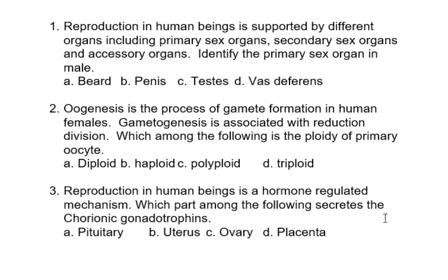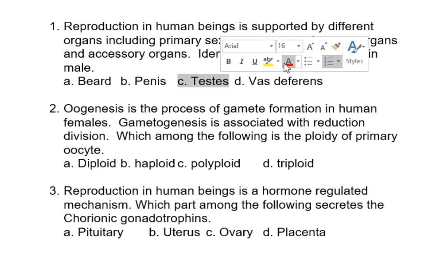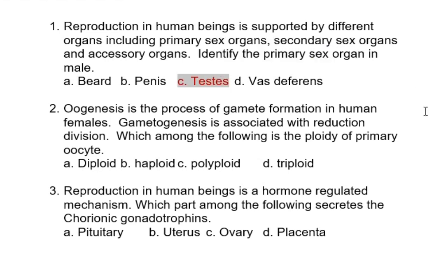The answer is option C: testes. Oogenesis is the process of gamete formation in human females. Gametogenesis is associated with reduction division. Which among the following is the ploidy of the primary oocyte? The primary oocyte is formed from oogonia. Oogonia undergo meiosis one and enter prophase one, where they get arrested. So the ploidy remains the same, that is diploid.